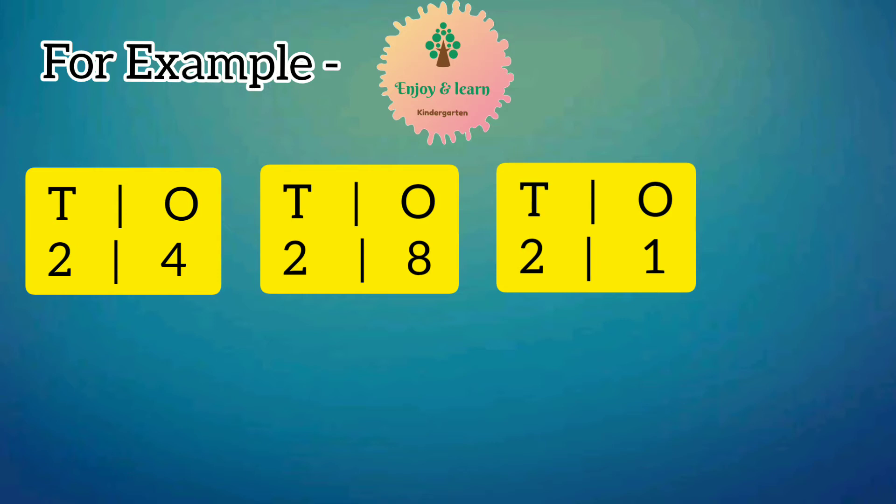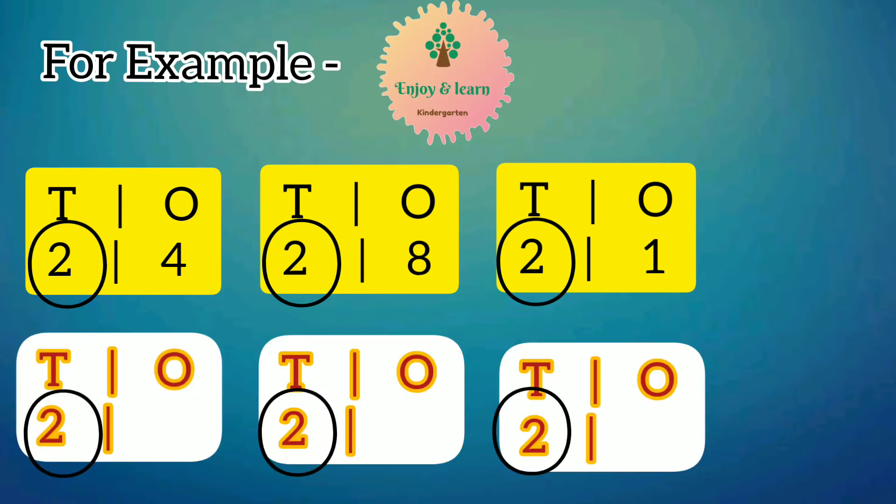As each number in boxes has two at its tens place, so we will keep it the same. Now at ones place we have number 4, number 8, and number 1.